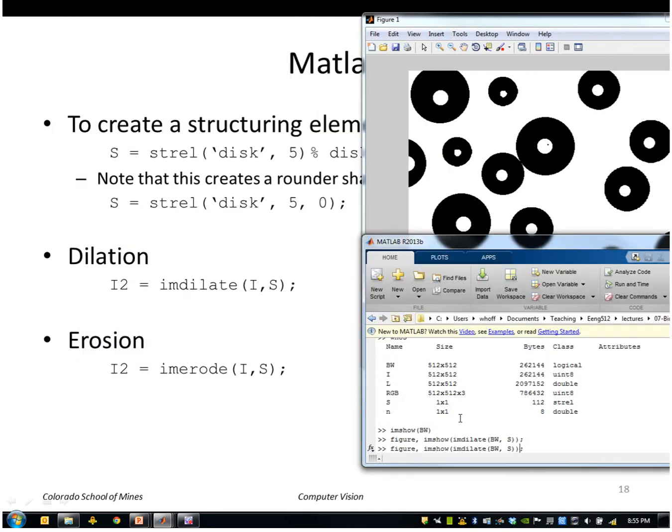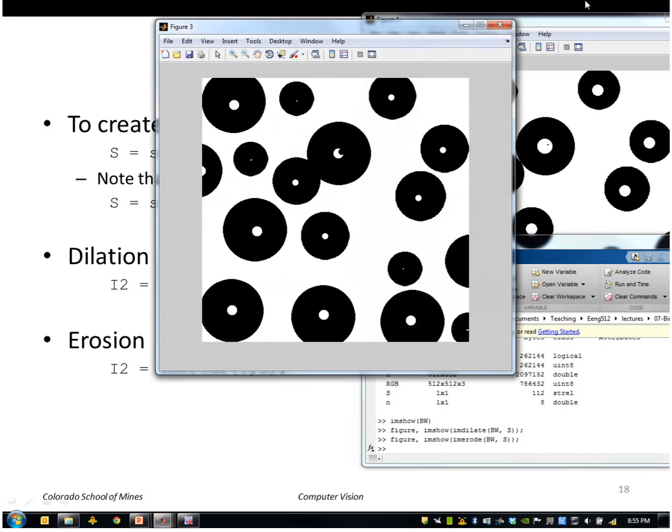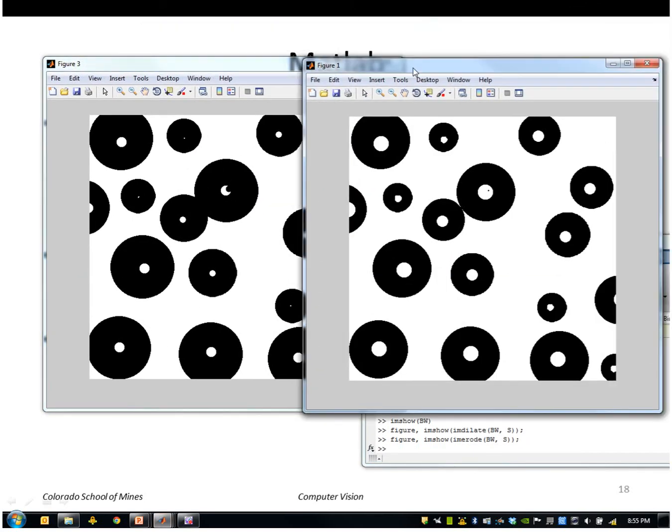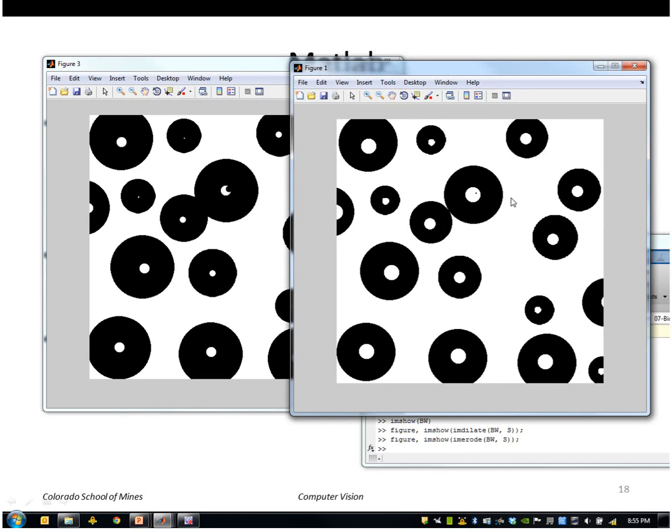I could also do erosion. So now the white regions have gotten smaller and the black regions bigger.